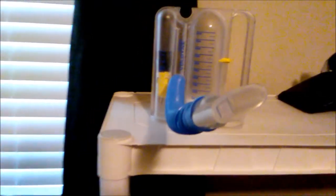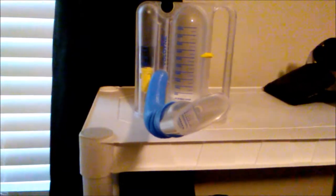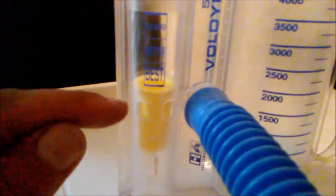How to use the Voldyne 5000 incentive spirometer: when you suck in, you want to get that yellow indicator to stay within the best, better, or good zone. You want to suck in really slowly.